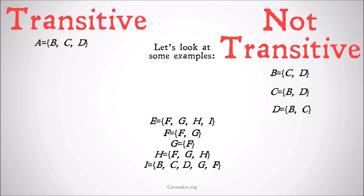E is the set of F, G, H, and I. Let's see if all of those are also subsets of E. F is the set of F and G. Both F and G are present in E, so F is a subset of E. G is the set of just F — note that doesn't mean G and F are equivalent, it means G is the set of F. Because F is both a member of G and a member of E, all of the members of G are members of E, so G is a subset of E. H's members are F, G, and H, so H is also a subset of E and a member of E.